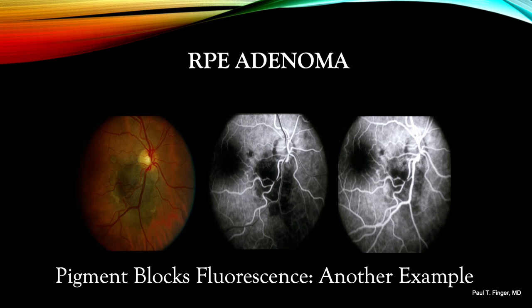Here is another example of pigment blocks fluorescence: this is an RPE adenoma. You see very little increased fluorescence through the duration of the study.